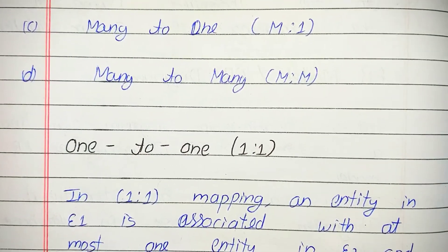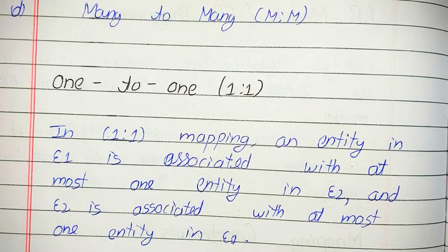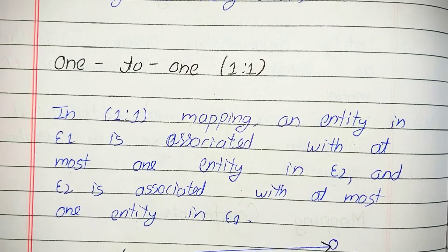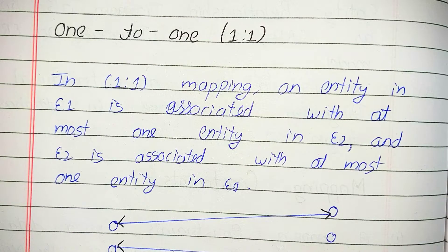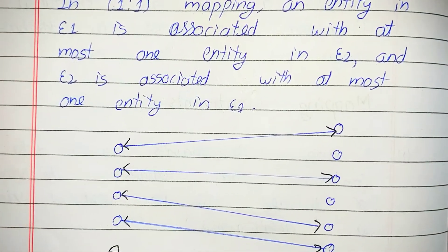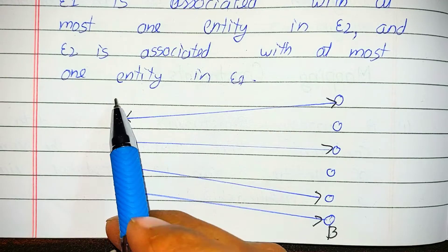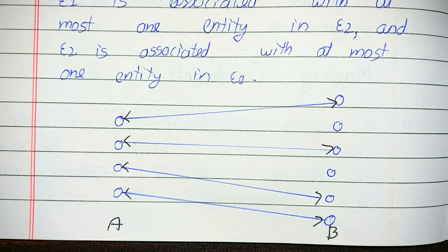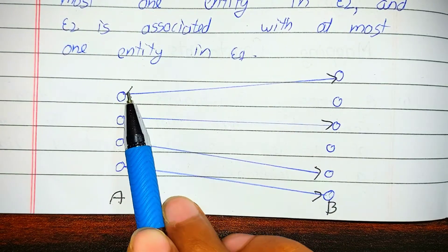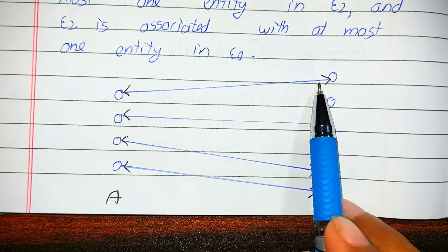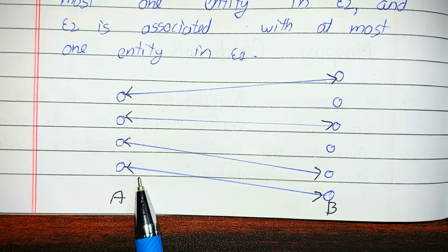In one to one mapping, an entity in E1 is associated with at most one entity in E2, and an entity in E2 is associated with at most one entity in E1. Here is the diagram of one to one — E1 and E2. One entity is connected to another one entity: first to this, second to this, third to this, and fourth to this.